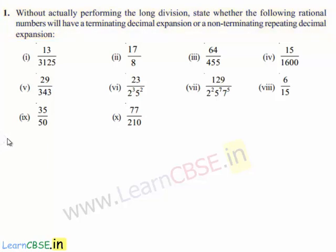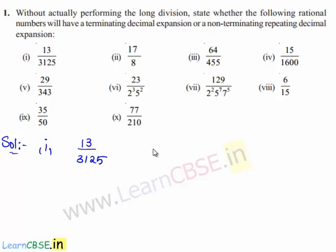Now let's move on to the solution. We consider the first rational number given, that is 13 upon 3125. To state whether the given rational number has a terminating or non-terminating repeating decimal expansion, we shall first write the denominator as a product of its prime factors. Therefore, we shall factorize the given denominator, that is 3125.